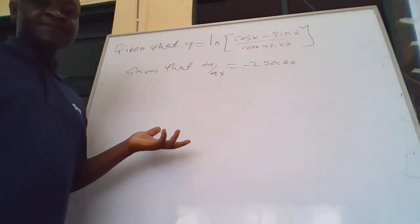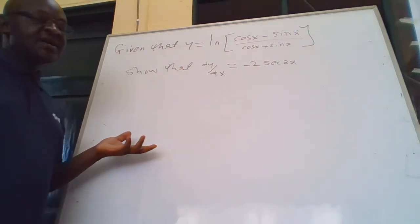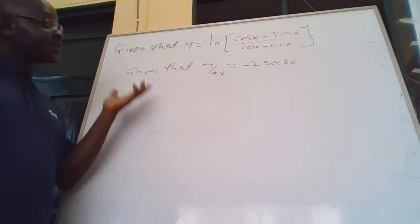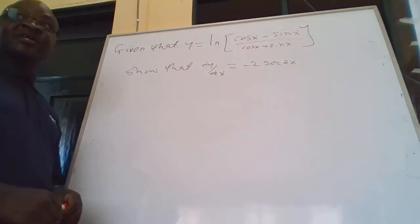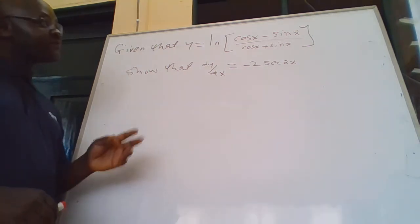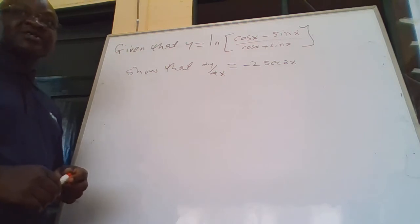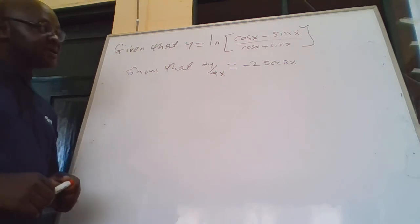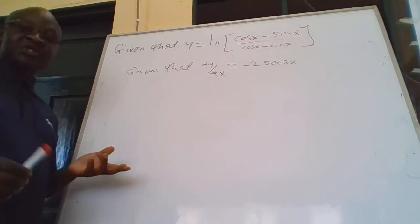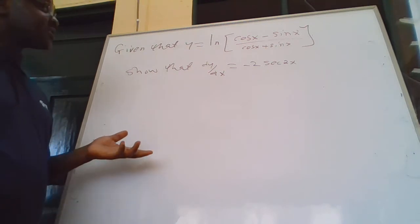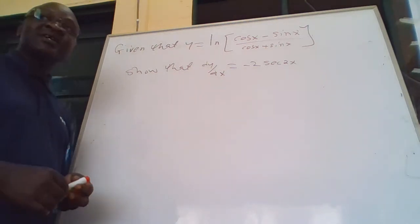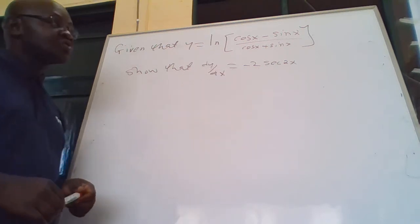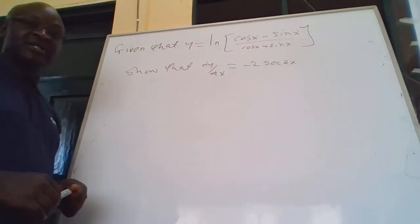Now, we have this equation. We have been given that y equals ln of (cos x minus sin x) over (cos x plus sin x), and using that information, they want us to show that dy/dx equals negative 2 sec 2x.